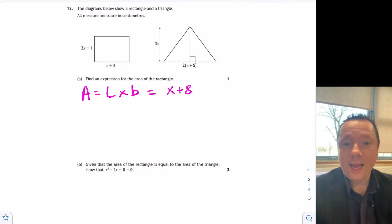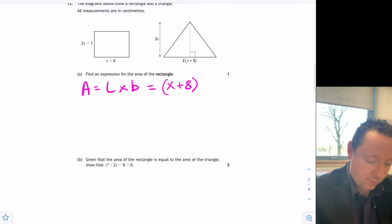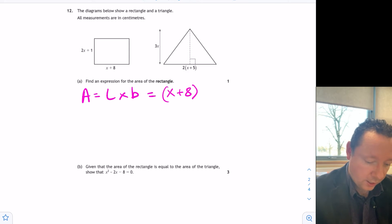Now, since this is going to be timesed by something else, I'll put that in brackets. And I need to times by the breadth or the height, which is 2x plus 1. 2x plus 1. So there is an expression for the area of my rectangle for one mark.